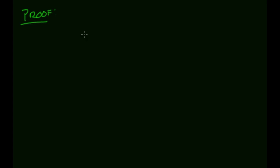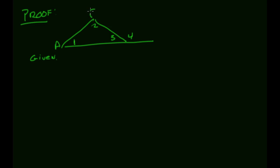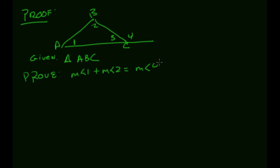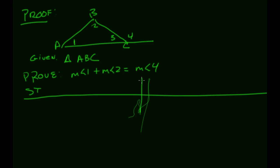Let's prove this theorem. I have triangle ABC with a tail. I'll label the interior angles as angle one, angle two, and angle three, and the exterior angle as angle four. I'm given triangle ABC. What I want to prove is that the measure of angle one plus the measure of angle two equals the measure of angle four.